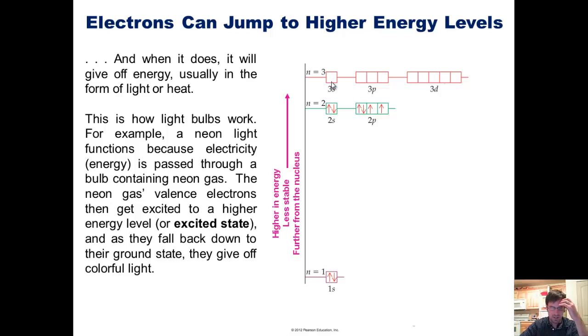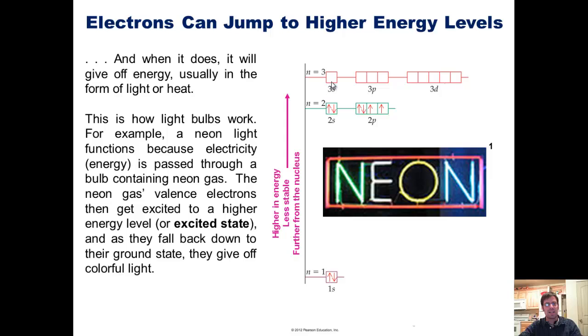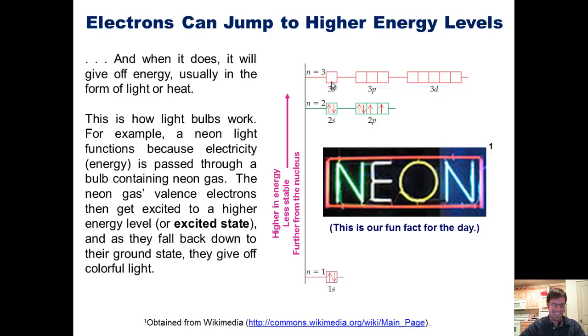Now this is how a light bulb works. For example, a neon light functions because electricity, energy, is passed through a bulb that is filled with neon gas. The neon gas's individual atoms' valence electrons then get excited and get promoted to a higher energy level called an excited state. And then, as those electrons fall back down to their ground states, they give off colorful light. This, just so you know, is our fun fact for the day.